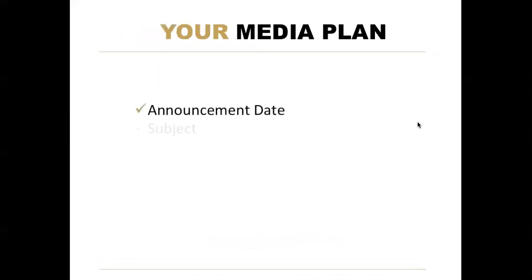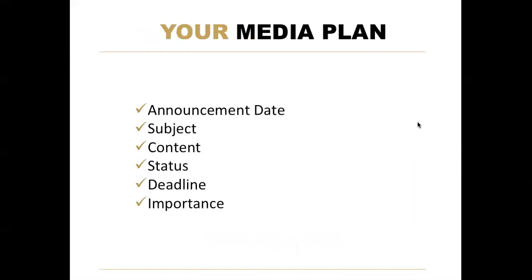So let's take a look. I'm going to open up each of these and go through them with you. The first element is announcement date — this is the date that your product, service, or story angle is going to go live. It could be the day you want the story, article, or guest post to go live, or the date your product launches. Next is subject — this is the subject of your media pitch. If you've got different pitches to blogs or media outlets, the subject may be different for each one.